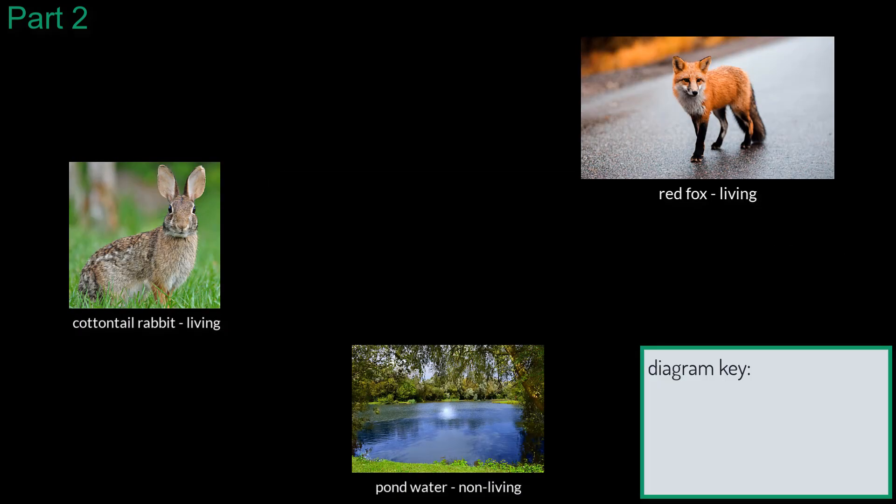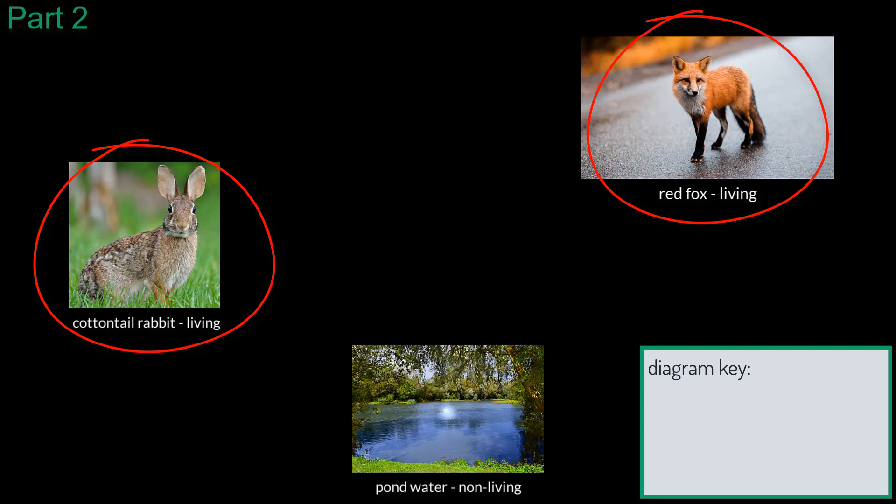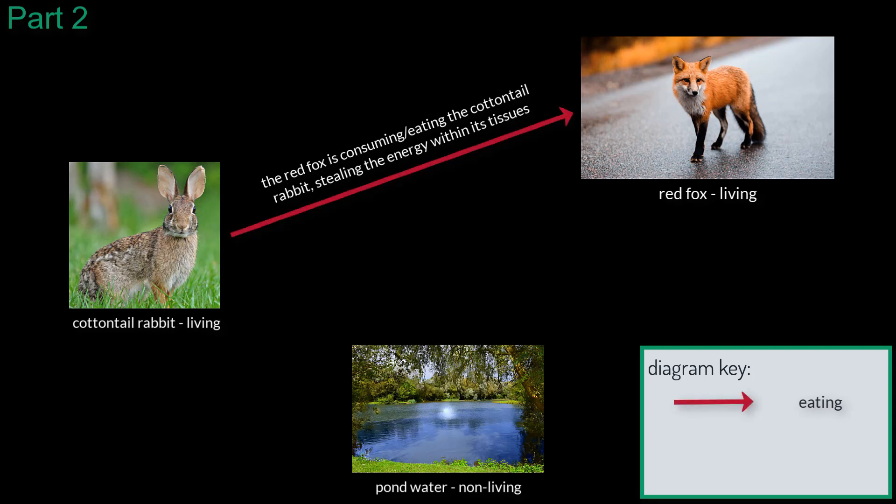First of all, when I think about these two organisms I immediately consider their interaction to each other, in which I believe is one of predator and prey. I am adding in a solid arrow that points from the rabbit to the fox which represents the fox consuming, or eating, the rabbit and stealing its energy to use for itself. The arrow is one-sided because I do not think there is a scenario where the rabbit could or would directly consume the fox.